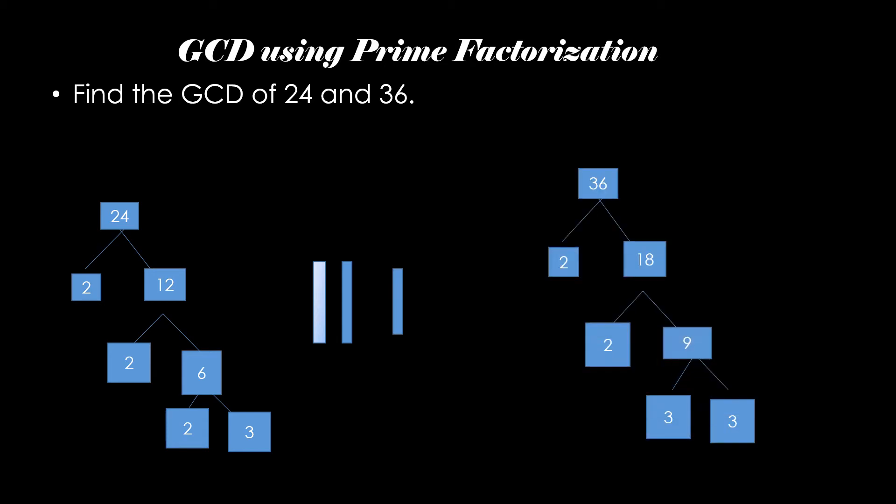So the prime factors can be taken. The same way for 36 we can find the prime factors. The prime factors for 24 are 2, 2, 2, 3. 36 will be 2, 2, 3, 3.